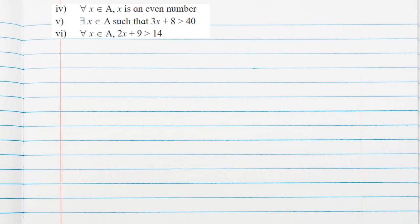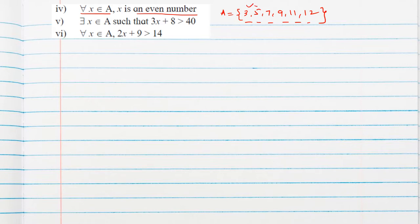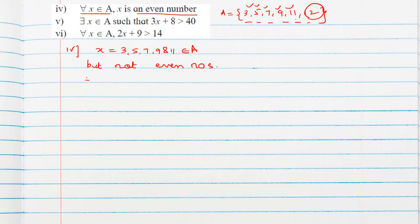Question 4: For all x belongs to A, x is an even number. Our set is {3, 5, 7, 9, 11, 12}. This says all elements in A are even, but that is wrong because all except 12 are odd. Since x = 3, 5, 7, 9, and 11 belong to A but are not even numbers, therefore the given statement is false.